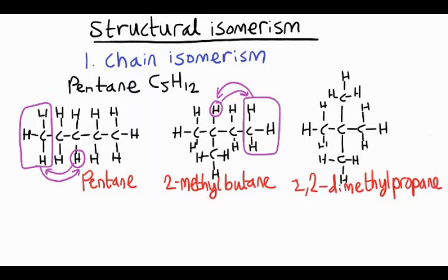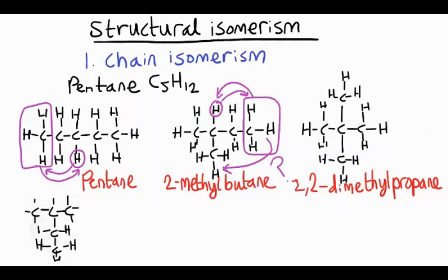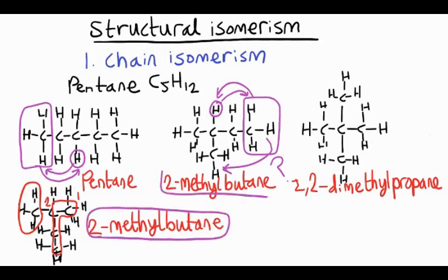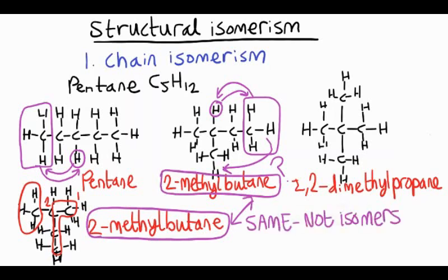What would happen if instead of moving that carbon onto the middle carbon, we put it onto the group we've already placed there? Could we have an ethyl group coming off the middle? If we draw the molecule with an ethyl group coming off the middle of a propane chain, we actually have to name it differently. The longest chain has four carbons, and on the second carbon we've got a methyl group, so it would be called 2-methylbutane — exactly the same molecule as before. If the two are the same, they're not isomers of each other.